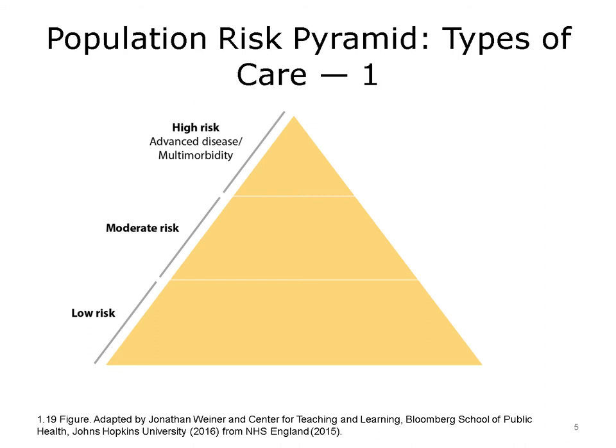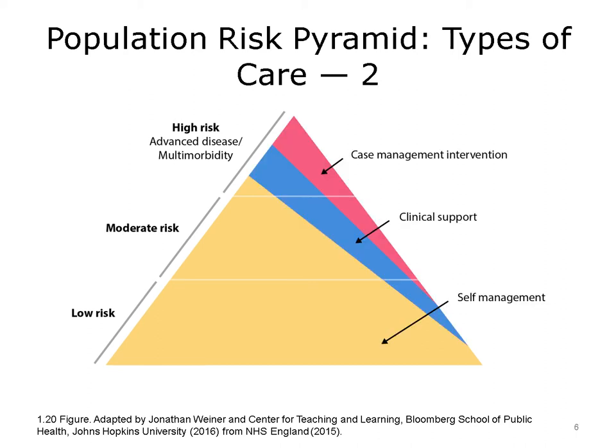Moreover, as we will discuss in another unit, some organizations, such as in the UK, also include multiple environmental or social factors, such as poverty status or housing status, that may also impact health. In addition to portraying how members of a population may fall into different risk levels, this pyramid also acknowledges that people can care for themselves, receive regular clinical care, or require more intensive case management interventions.